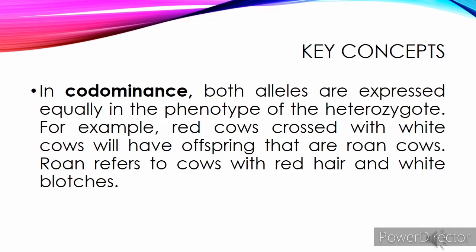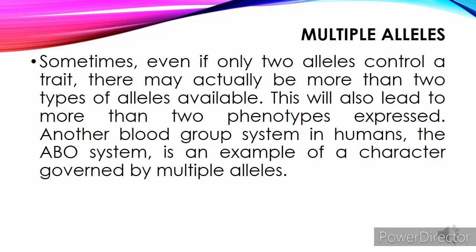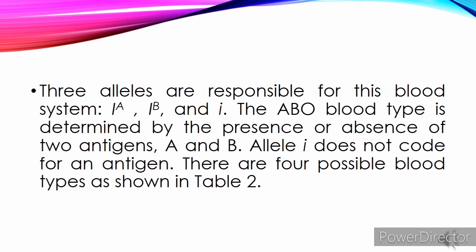For example, red cows crossed with white cows will have offspring that are roan cows. Roan refers to cows with red hair and white blotches. Multiple Alleles: Sometimes, even if only two alleles control a trait, there may actually be more than two types of alleles available, which will also lead to more than two phenotypes expressed. Another blood group system in humans, the ABO system, is an example of a character governed by multiple alleles.